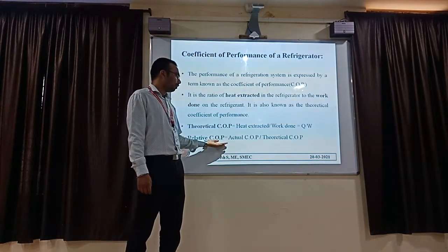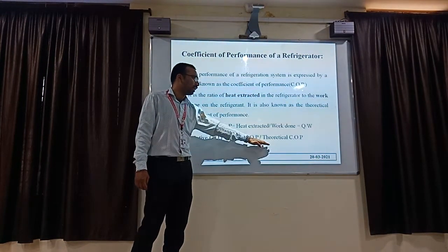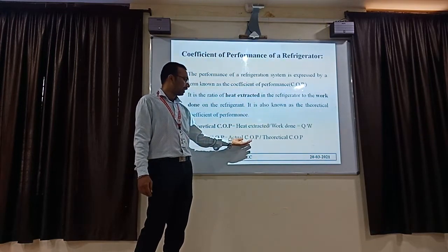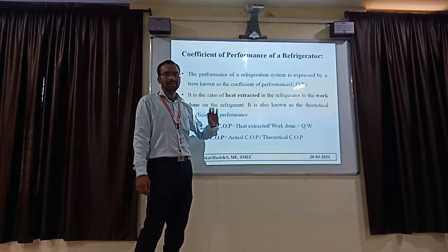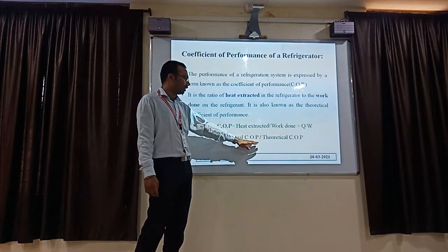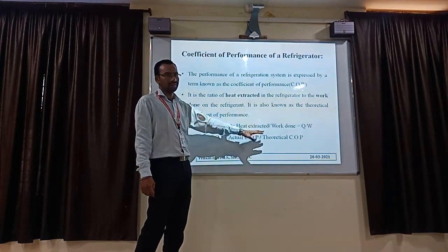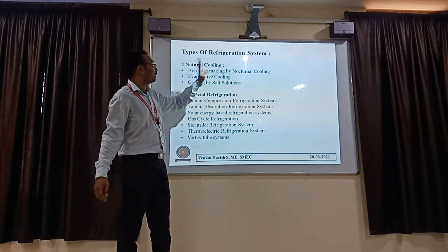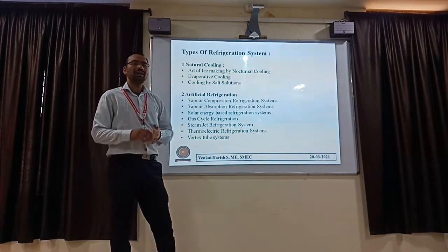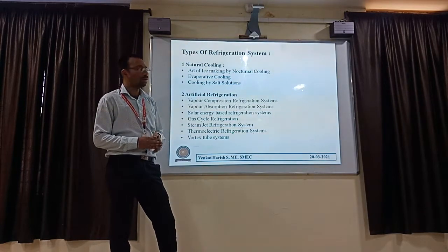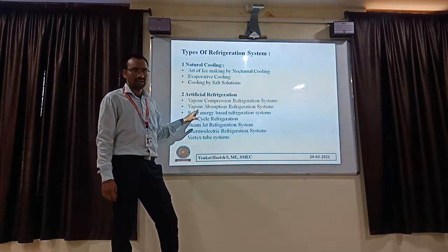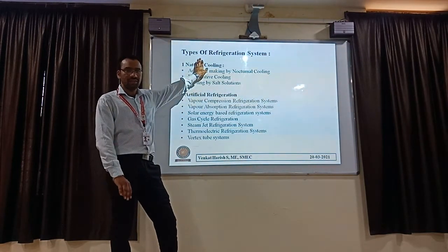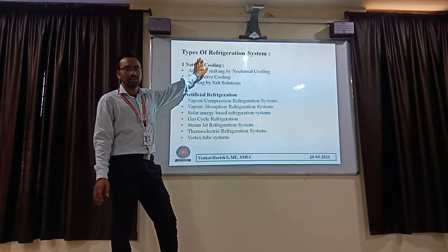The relative coefficient of performance is nothing but actual performance divided by theoretical performance. The actual is the practical value, while theoretical is as per the principal theories. Based on the principal theories we are going to find the value of COP. The refrigeration is classified as natural and artificial cooling — both are possible.